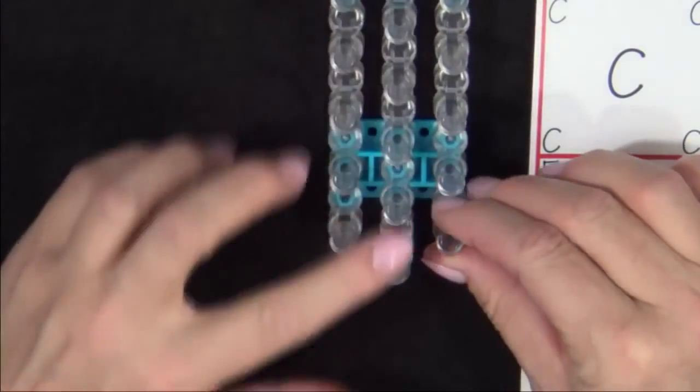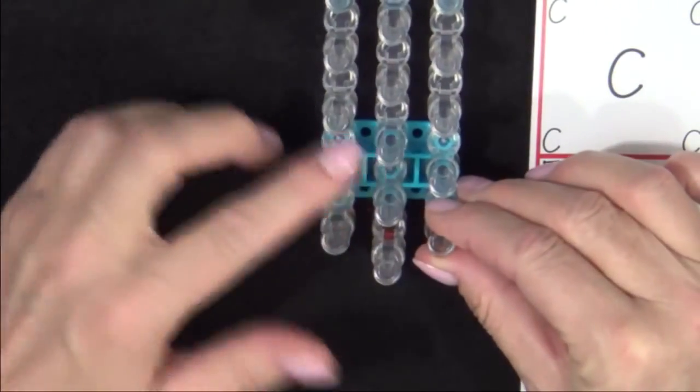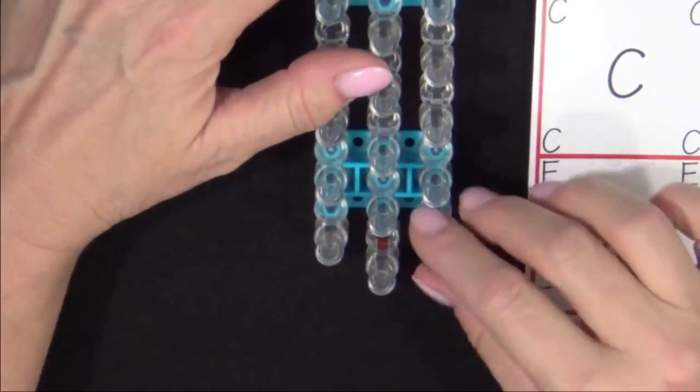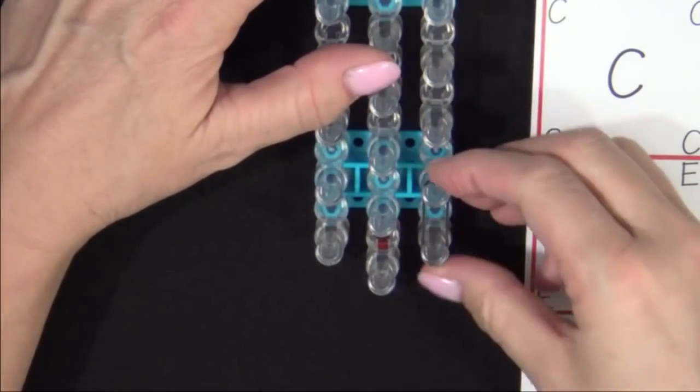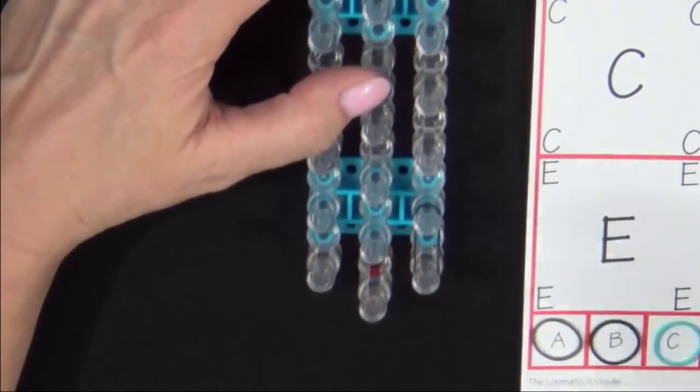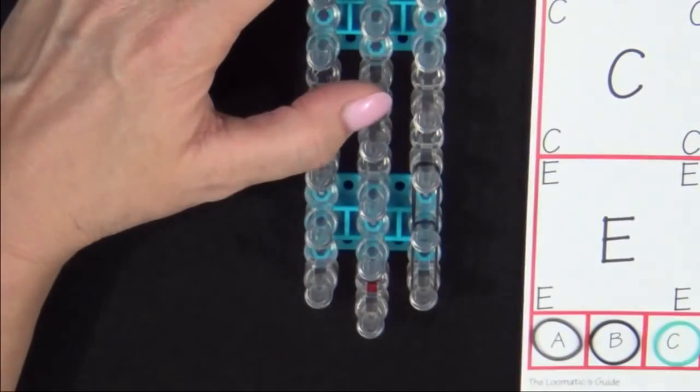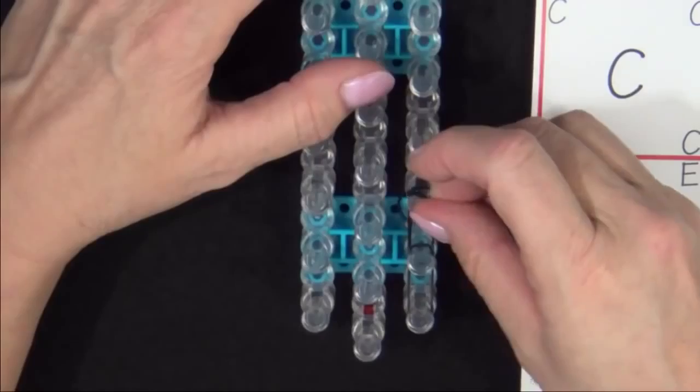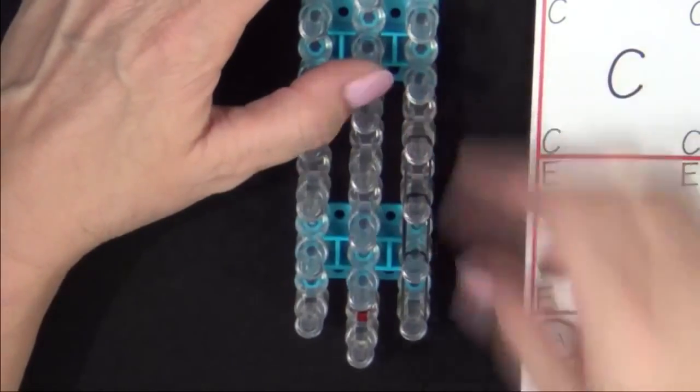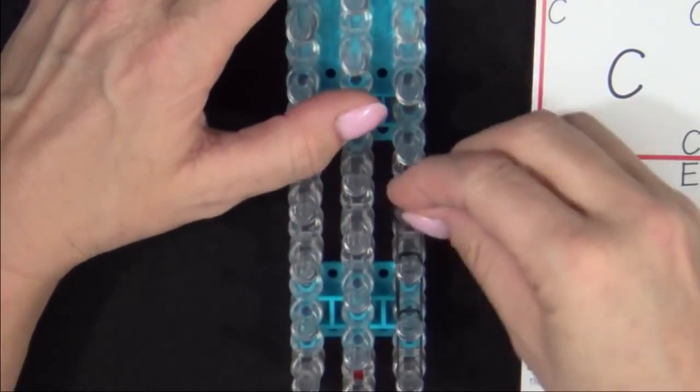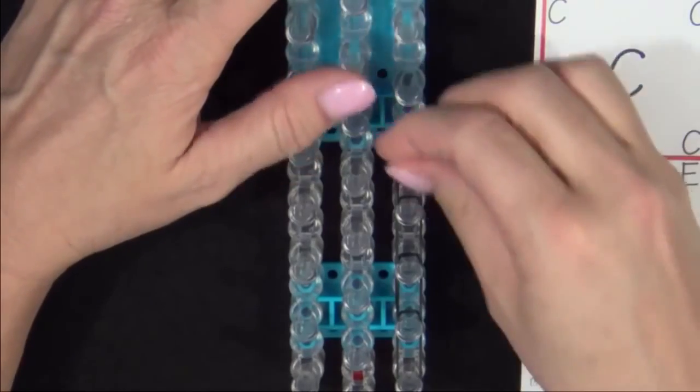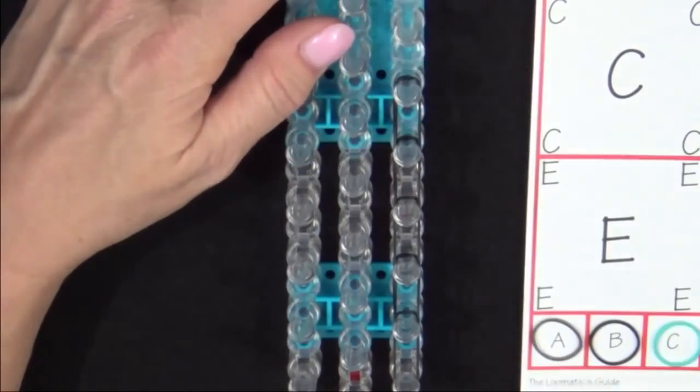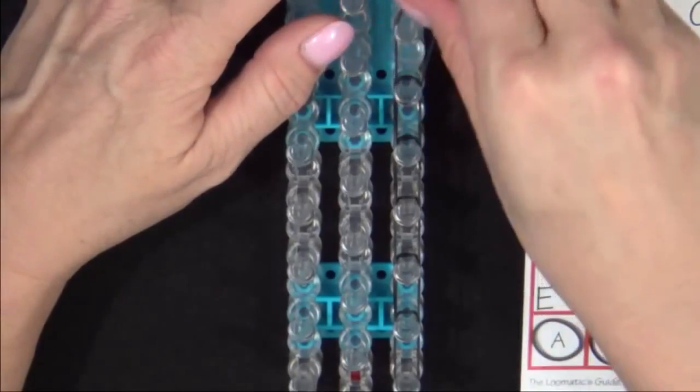To extend a bracelet, place your loom so that the red arrow is pointing away from you. For smaller wrists, you may only need three or four bands. For a larger wrist, you may need to use six or more to make this extension. You'll place these bands up the right side of the loom. And then once you have them all placed, you'll loop them.